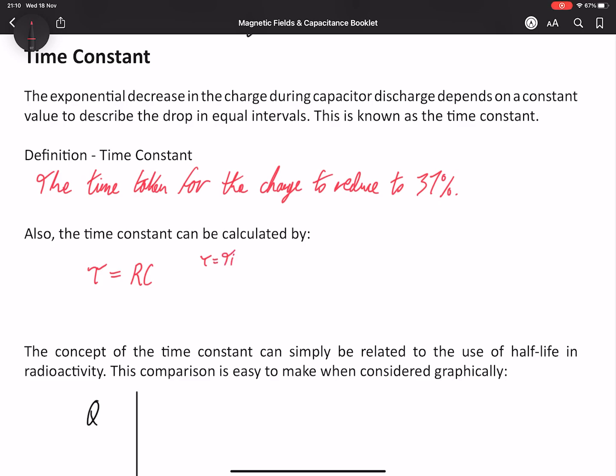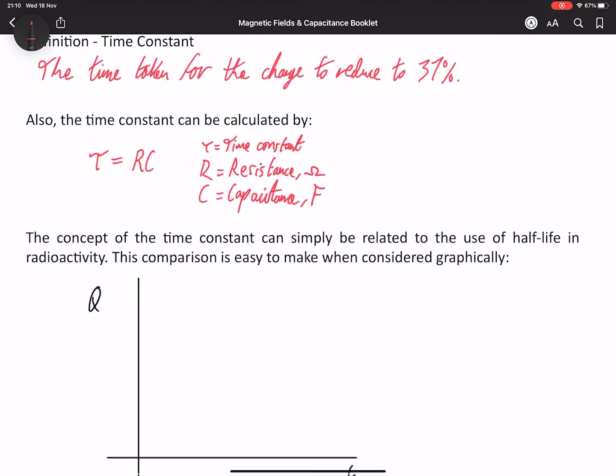So T or tau for the time constant itself, which is just measured in seconds, and that is the resistance in ohms multiplied by the capacitance in farads. So this is a very easy value to work with, and it can be something you're asked to find. So in which case, you need to remember that RC as a combination is the time constant.